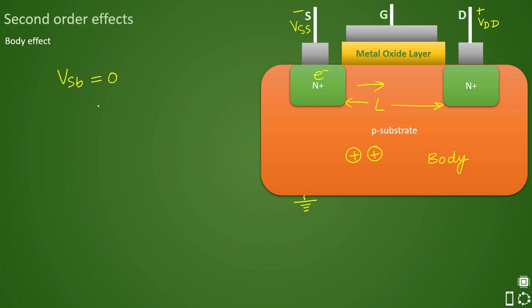Now let us assume that somehow your substrate voltage is going below the zero voltage. If it goes below the zero voltage at that time your electron will need more positive gate potential.